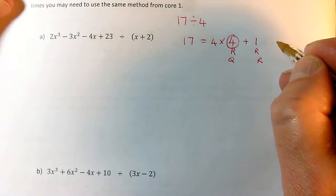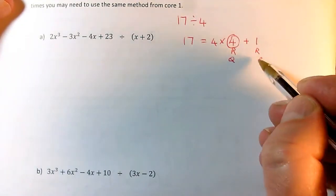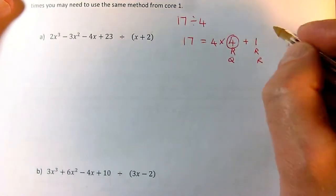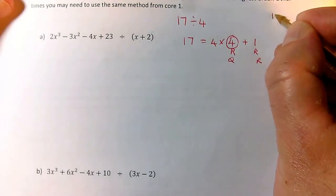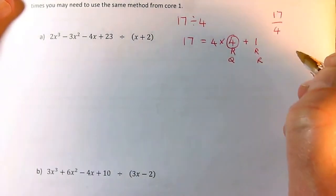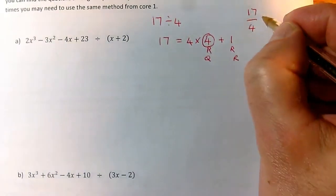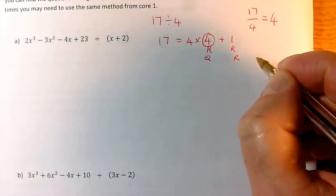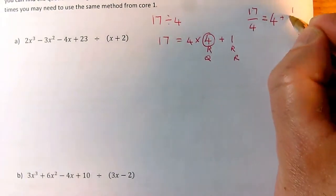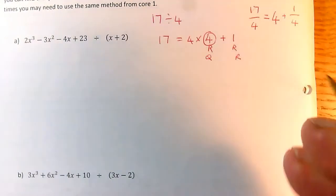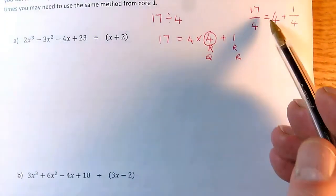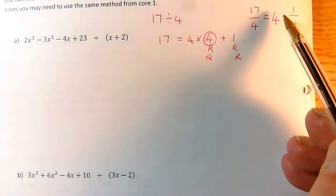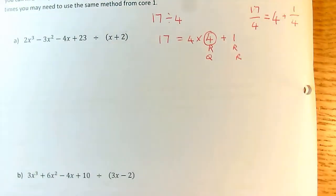This thing here is called the quotient, and this thing here is called the remainder. So another way of writing this conclusion, I could say the quotient is 4 and the remainder is 1, or I could say that 17 over 4 equals the whole number part of the answer, which is 4, plus the remainder was 1, and that I couldn't divide by 4. So I can write it as a simplified whole number plus a fraction.